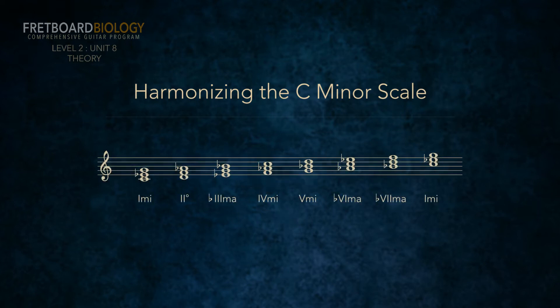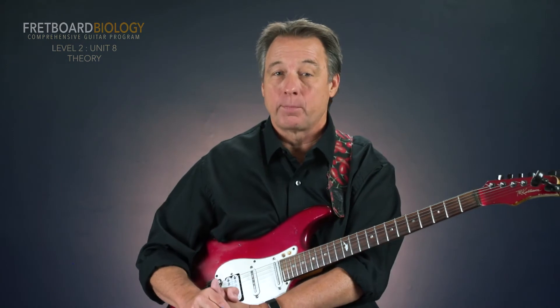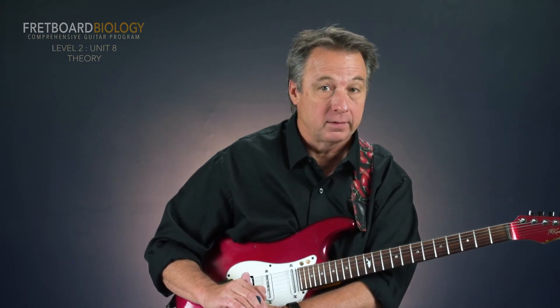So in the C natural minor scale, and in all natural minor scales, the one chord is always minor, the two chord is always diminished, the flat three chord is always major, the four chord is always minor, the five chord is always minor, the flat six chord is always major, and the flat seven chord is also always major. We say these chords are diatonic to the key of C natural minor. This is a really important point: if we repeat this process with the natural minor scale on any other tonic, the result will be the same.